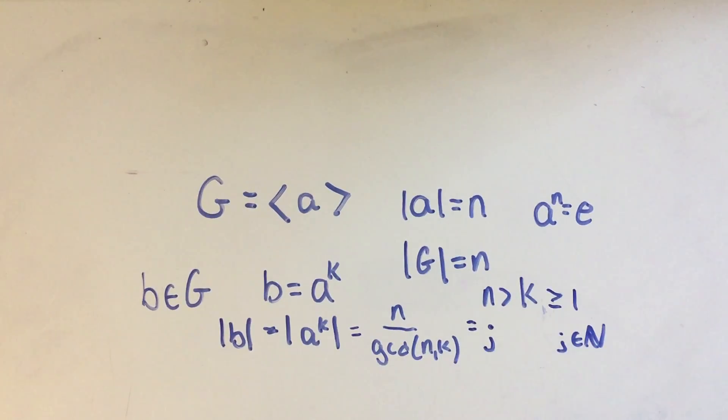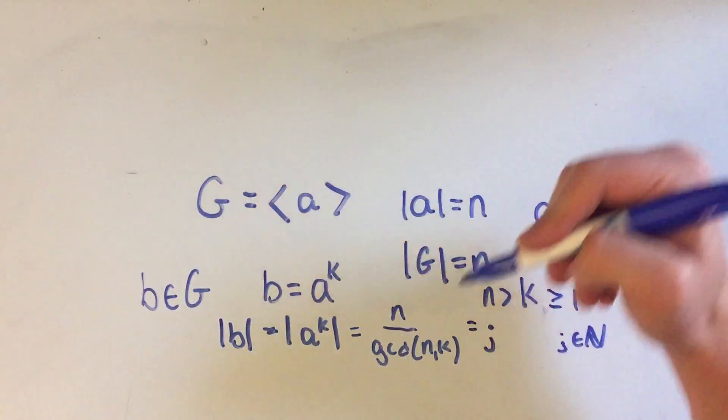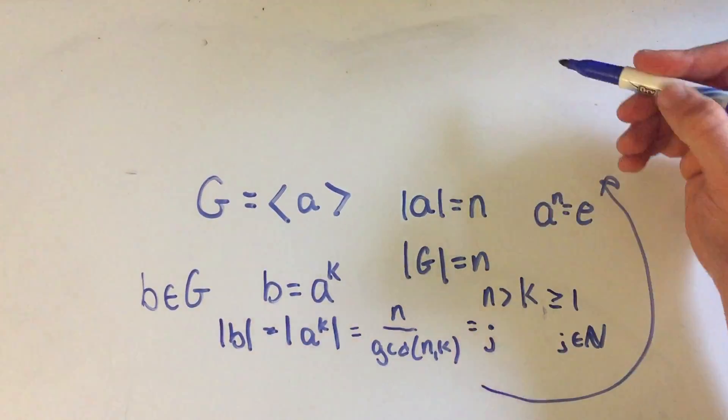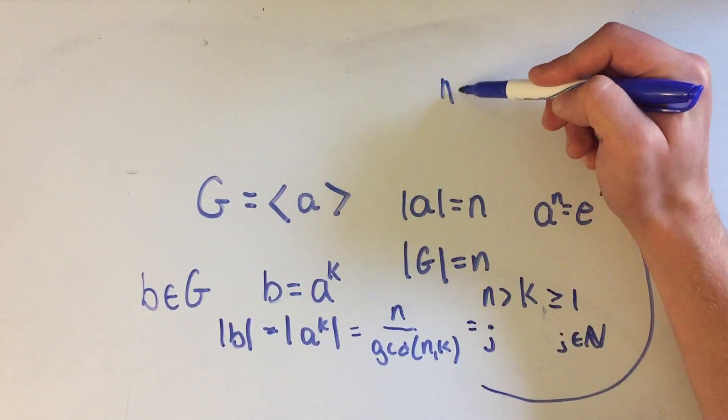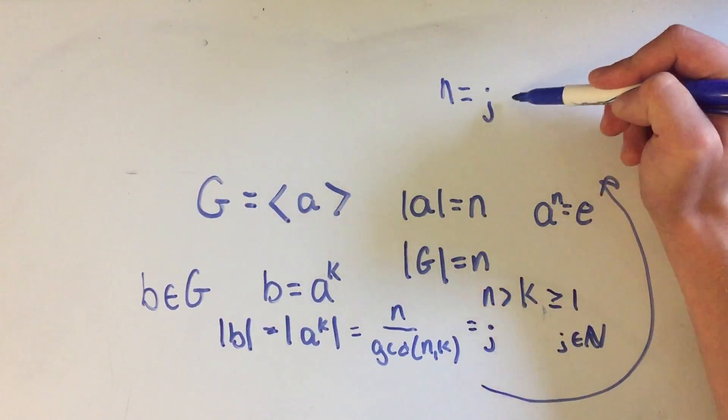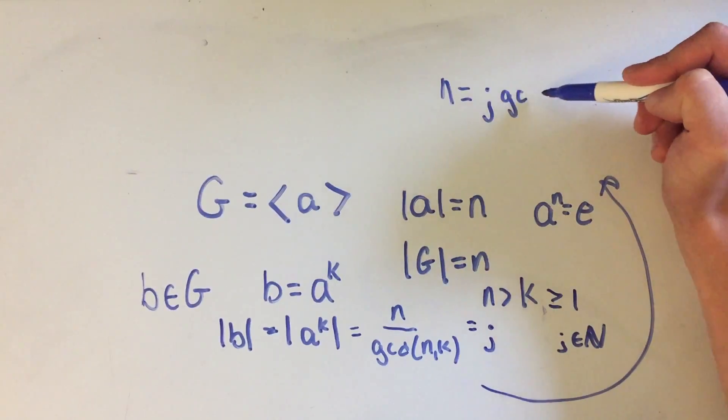I could rewrite this. Maybe I need a little more room. I'm going to go up here. If I multiply both sides by the GCD, I would have N is equal to J times the GCD of N and K.